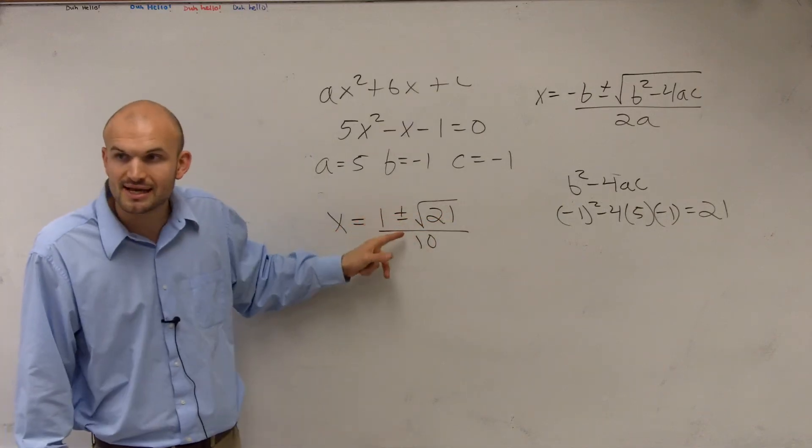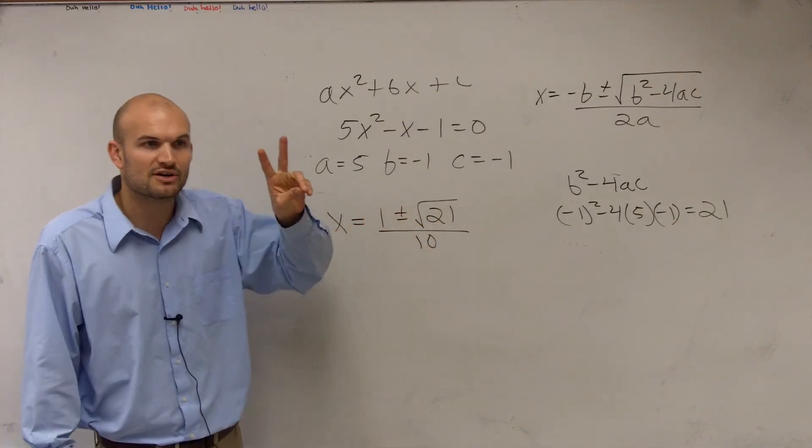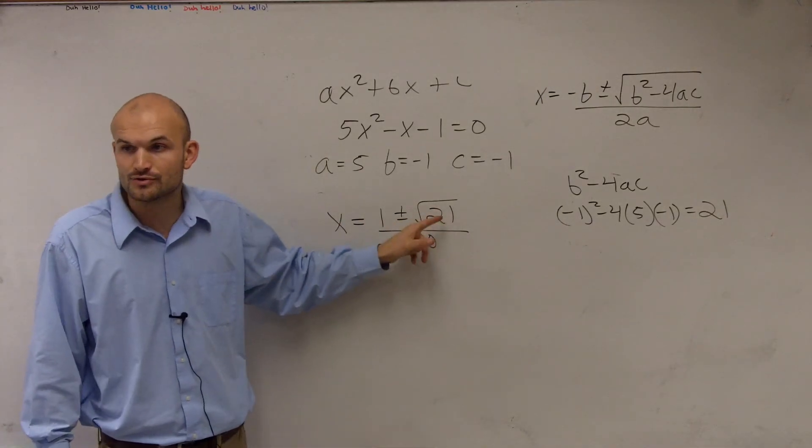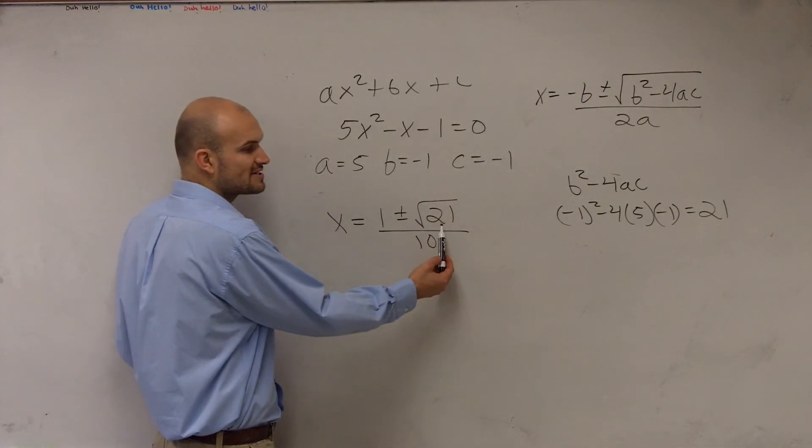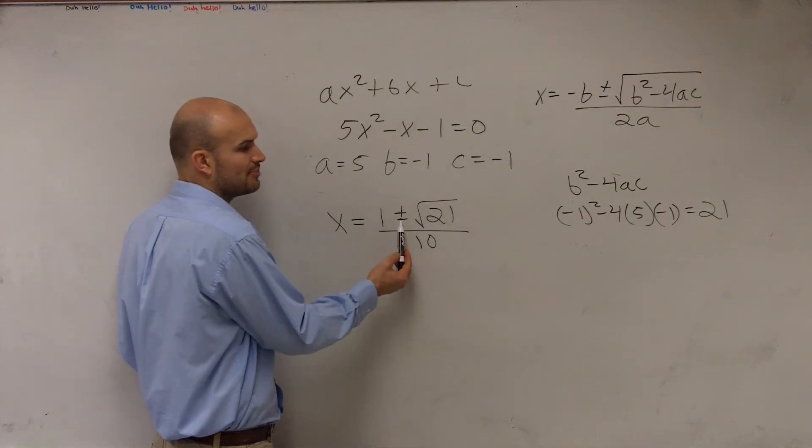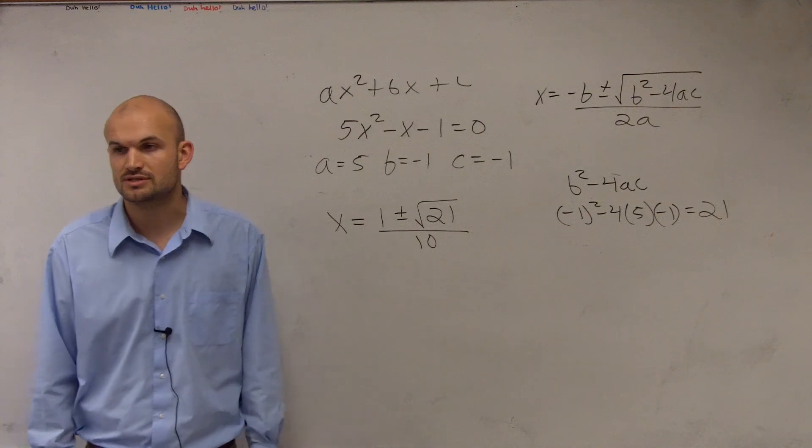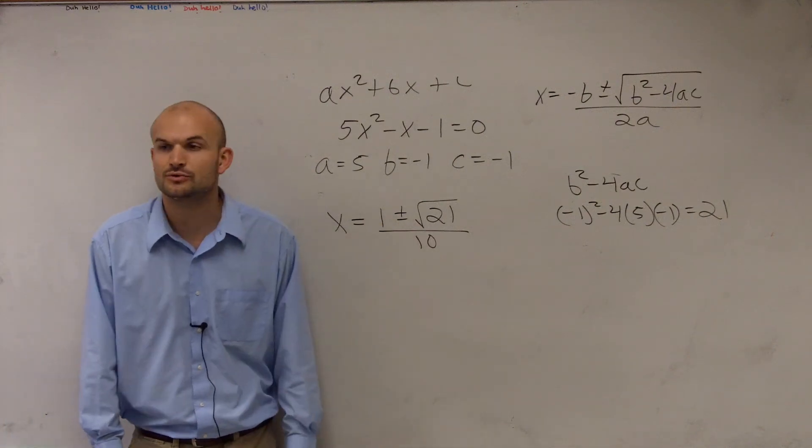And do you see how there's a plus and a minus? So that's why we're going to have two real irrational roots. Because square root of 21 is going to produce an irrational number. And plus or minus that, you're now going to have two solutions. So that's why you're going to get your two irrational roots.